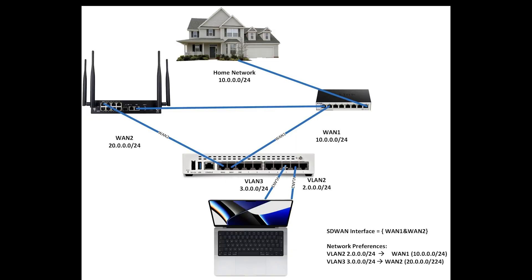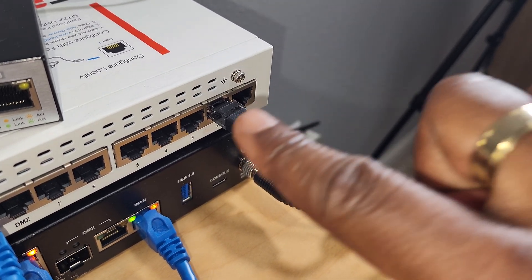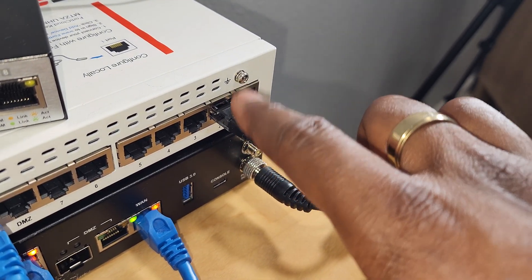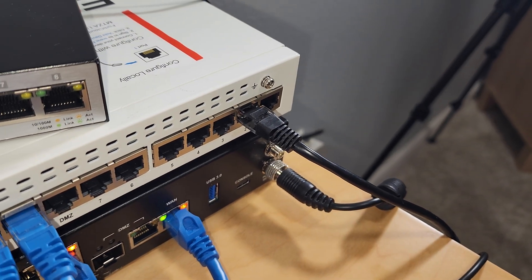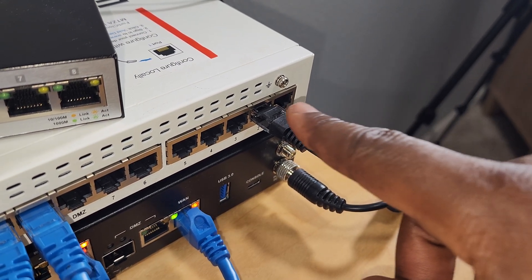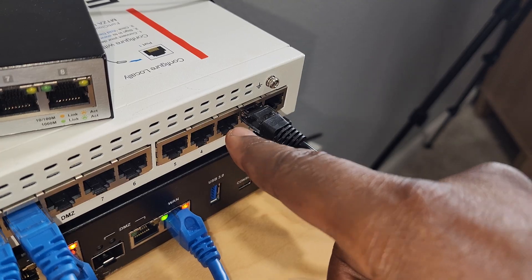Down here I have my MacBook, and I created two VLANs on the FortiGate: VLAN 2 with 2.0.0.0/24 and VLAN 3 with 3.0.0.0/24. Right now my device is connected to port number 2, so it's part of VLAN 2. Later when I want to test my configuration I'm going to move it from port 2 to port 3 so that it's part of VLAN 3.